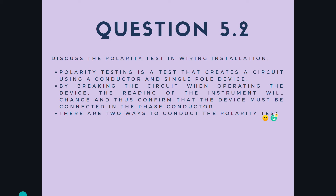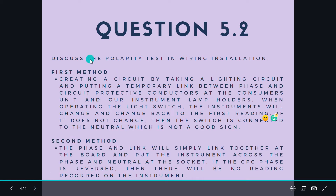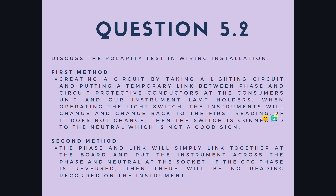There are two ways to conduct the polarity test. The first method is by creating a circuit, taking a lighting circuit and putting a temporary link between phase and circuit protective conductors at the consumer's unit and the instrument lamp holders. When operating the light switch, the instrument reading will change and change back to the first reading. If it does not change at all, then the switch is connected to the neutral, which is not a good sign.